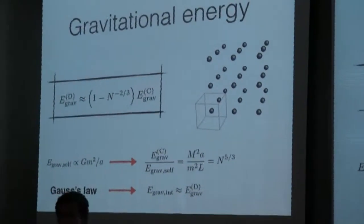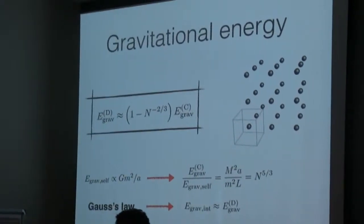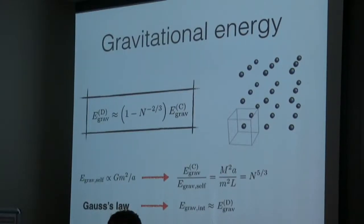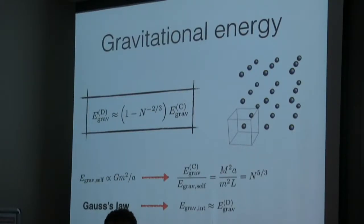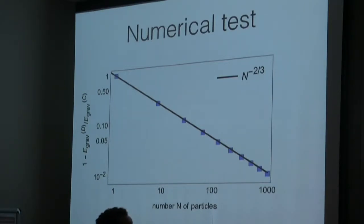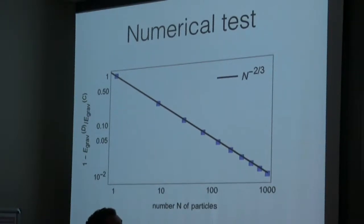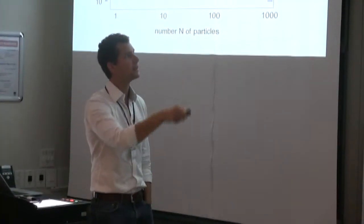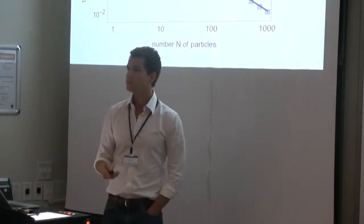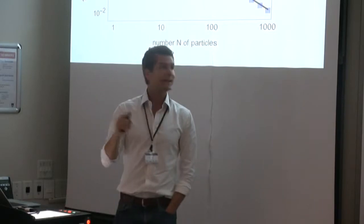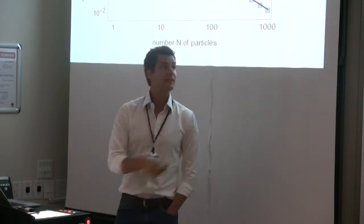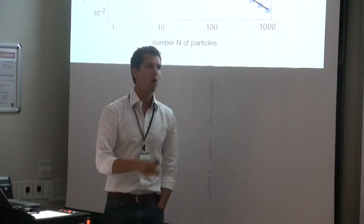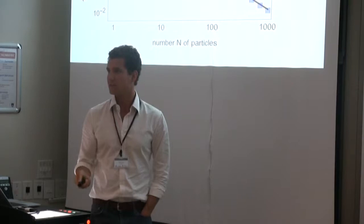Using this bridge, I have a direct relation between the gravitational energy of the discrete model and the continuous model — it scales as N to the minus 2/3. To check this is not wrong, you can calculate this numerically. The plot shows the ratio of gravitational energy between the discrete and continuous model as a function of the number of particles. The blue squares are numerical calculations and the line is the N to the minus 2/3 scaling — it works very well.